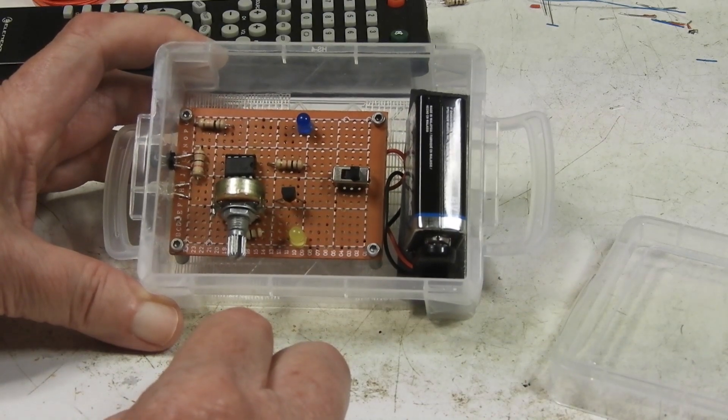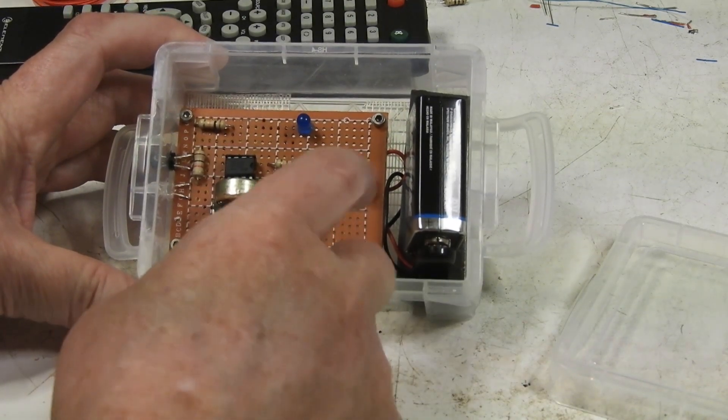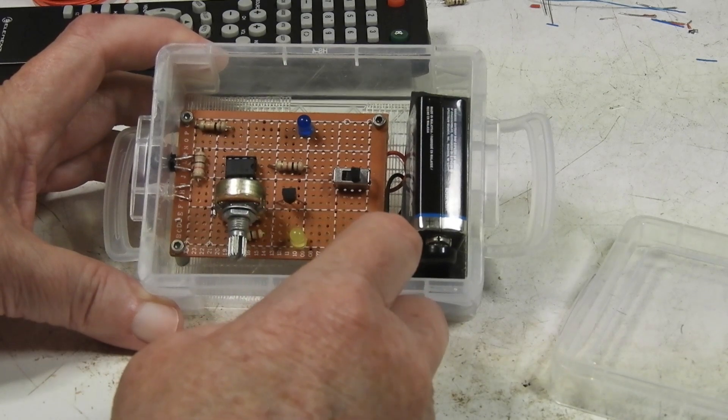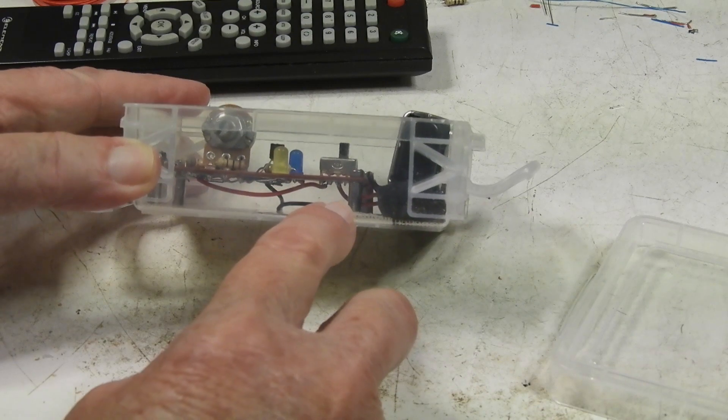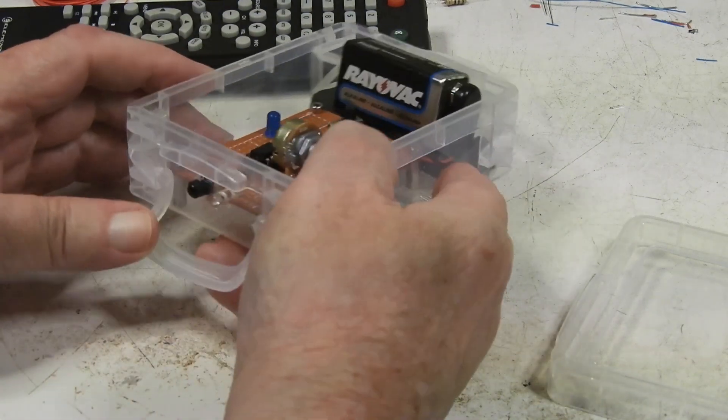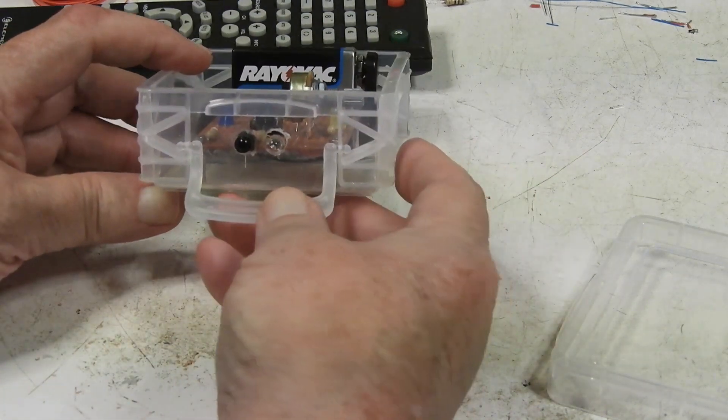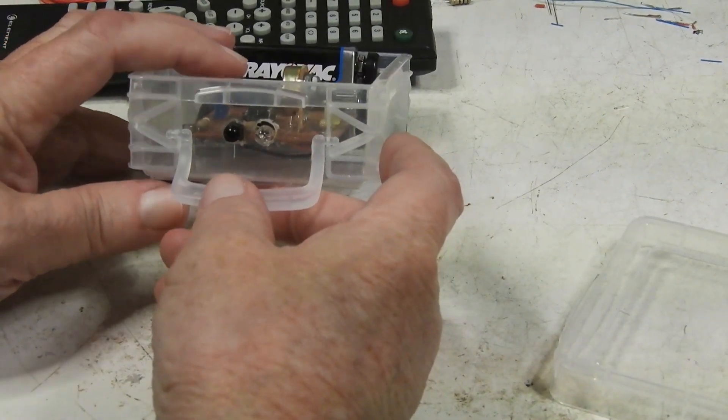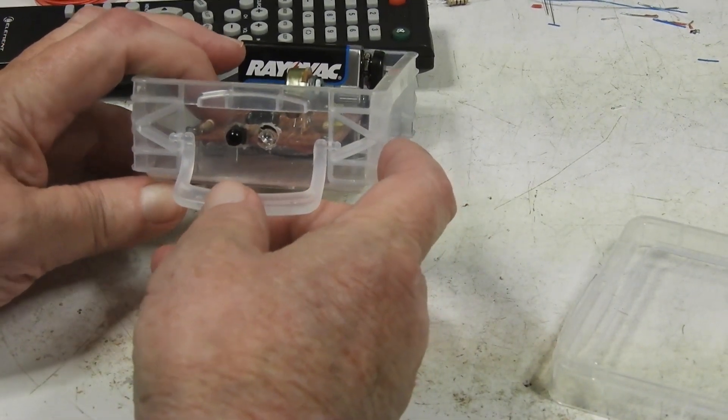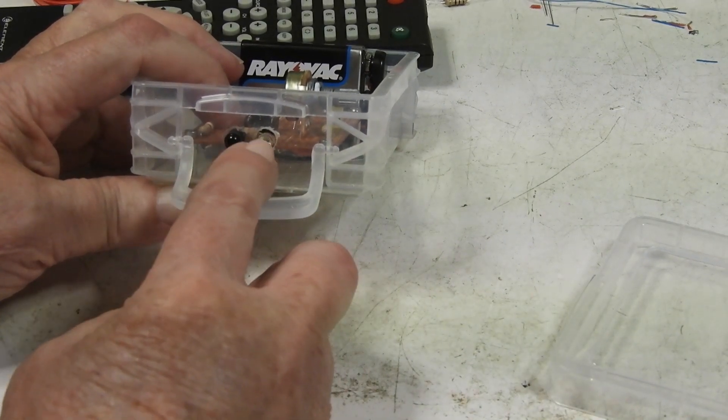How I built this: after I built the board, I put standoffs on the board, then I put the board in the box and marked where I needed to drill the holes for the receiver and the transmitter diode.